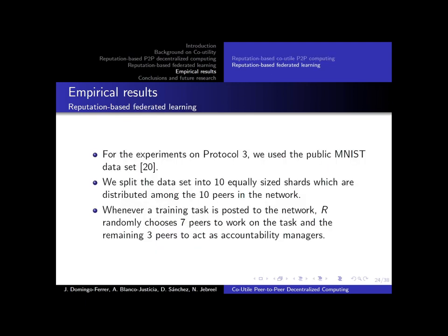In the federated learning case, using Protocol 3, we use the public MNIST dataset to train a handwritten digit recognition model. We have 10 peers in the network and split the dataset equally among all of them. We carry out two types of attacks: random attacks, also known as Byzantine attacks, which try to prevent the network from converging, and poisoning attacks that try to make the network misclassify one class into another.